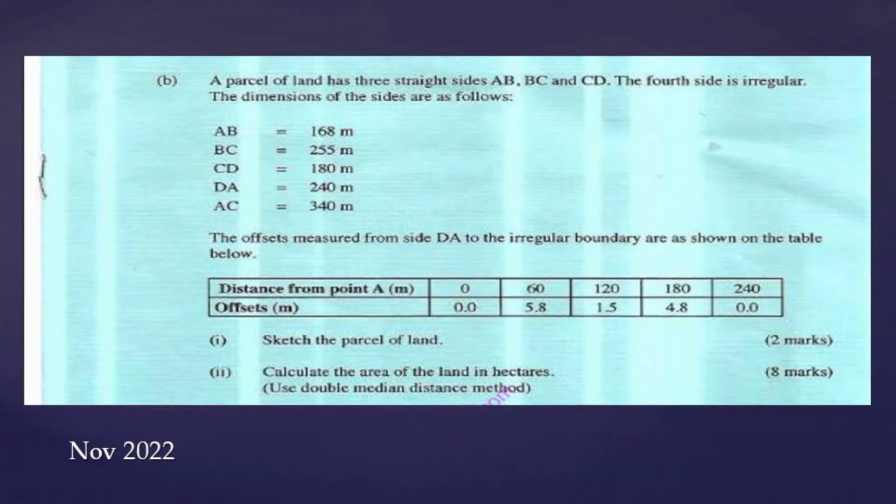Let's continue with our question. The offsets measured from side DA to the irregular boundary are as shown on the table below. Then our table, we have the distances from point A on our first row, and then we have offsets given to us. So that distance is the distance interval of 60 meters found from one offset to another offset.